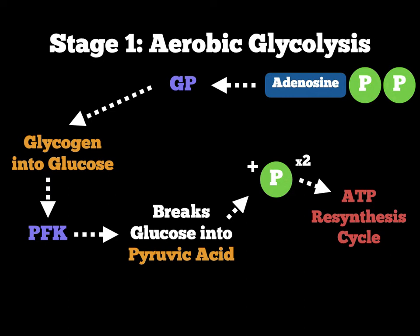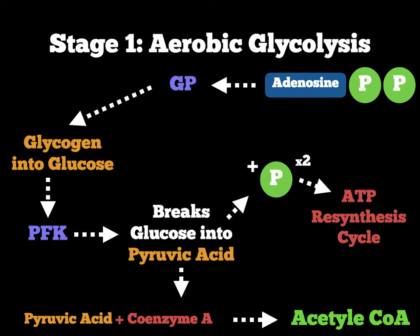However, this is where it changes from the lactic acid system. Once we have pyruvic acid and we're walking slowly — breathing in enough oxygen — oxygen is the key catalyst here. If oxygen is present, the pyruvic acid is added to a supporting enzyme called coenzyme A. It's not a major enzyme, but it's a supporting enzyme. It combines with pyruvic acid to create a new substance called acetyl-CoA. That's the end of stage 1 — we're gaining two phosphates for ATP resynthesis from aerobic glycolysis.